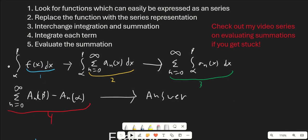In terms of math: f of x is a function that we can represent as a series, so we replace it with its series representation. Then we interchange the summation and the integration, and integrate the terms that are inside. When we integrate, we get rid of all the x's and end up with functions of alpha and beta, because this is a definite integral. So we end up with a_n of beta minus a_n of alpha.